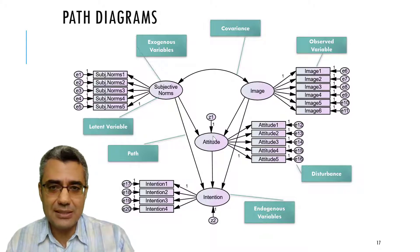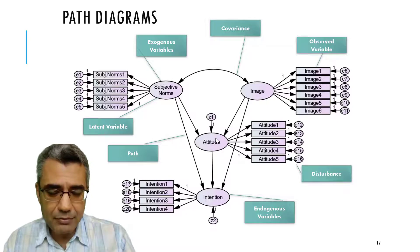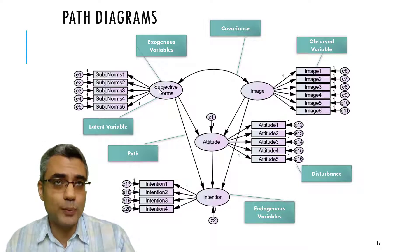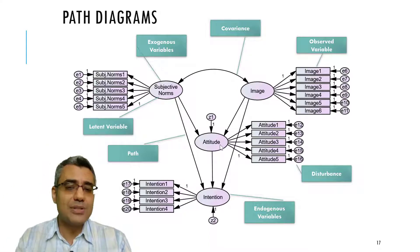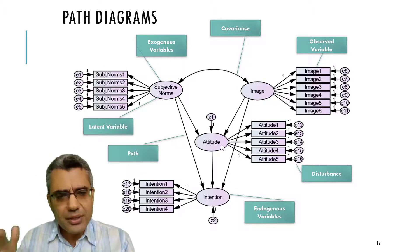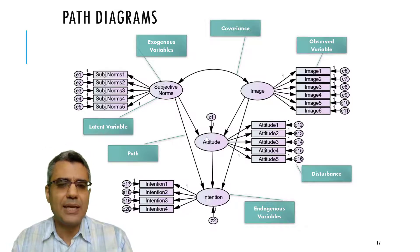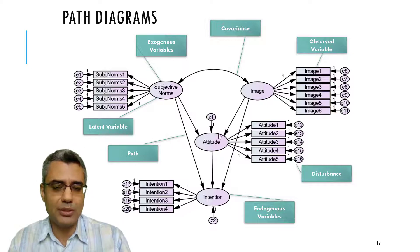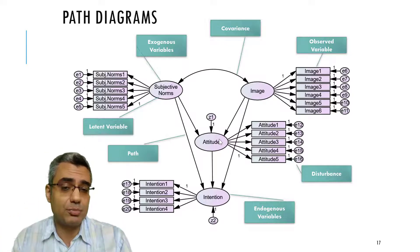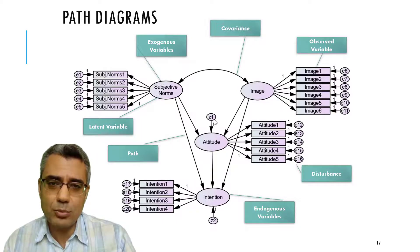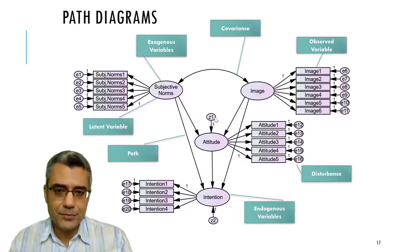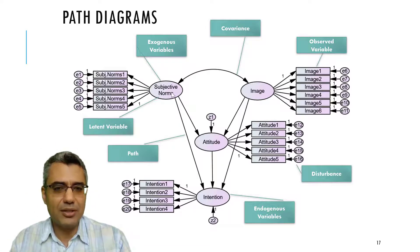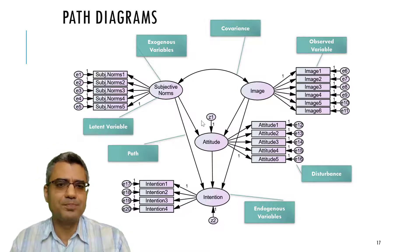For example, attitude is explained by image and subjective norms, but we cannot explain attitude with 100% accuracy using just these two variables — they may explain 40% of attitude. What about the other 60%? There are other factors not included in the model. You may include more factors to predict attitude, but you should never reach 100%. What is not explained by the model is shown with an error term. Always include an error term on any dependent variable in your model.